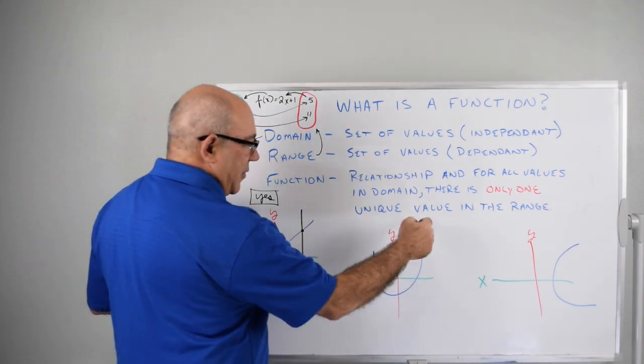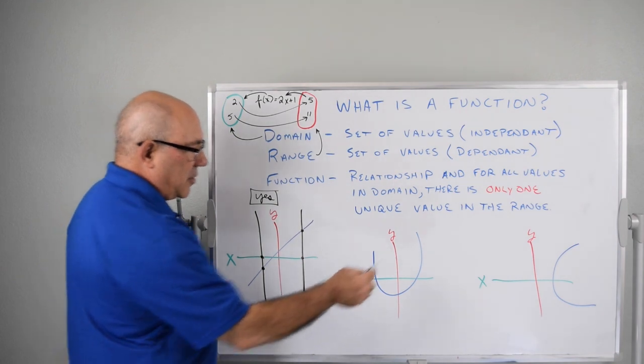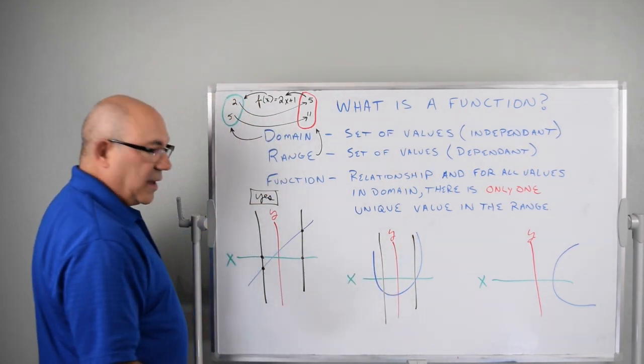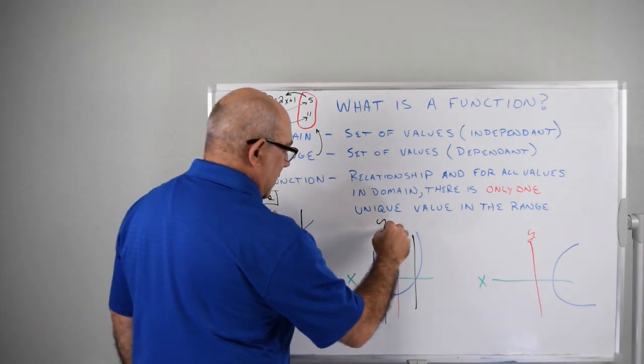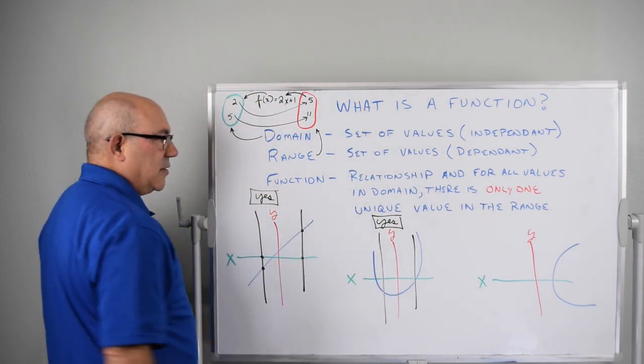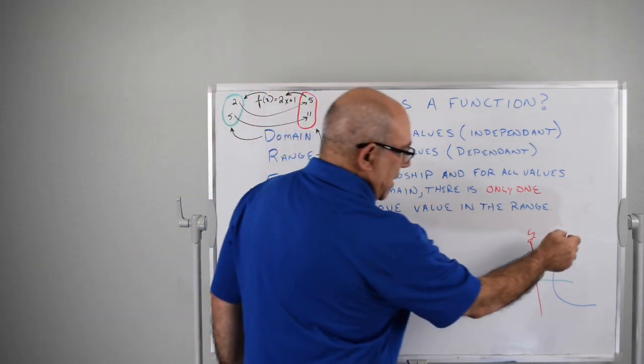Now here, we have kind of a weird shape parabola. And if we do the vertical line test, there's only one place that that crosses. So we would say yes, that's a function. The vertical line test intersects in one place, and it satisfies that there's only one unique thing, one unique value.